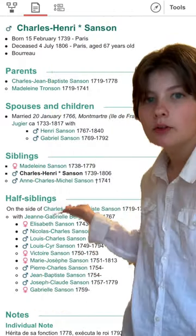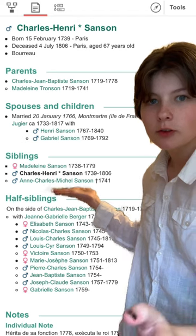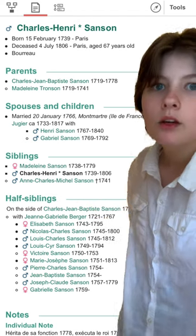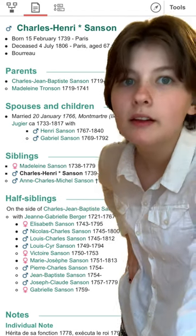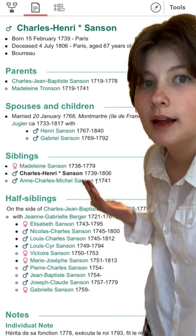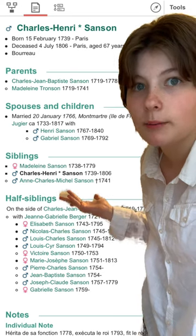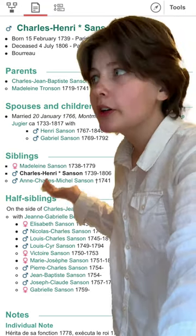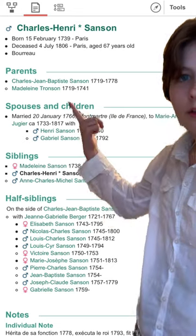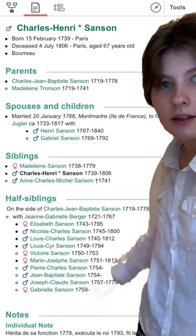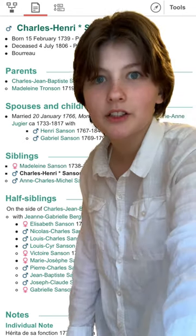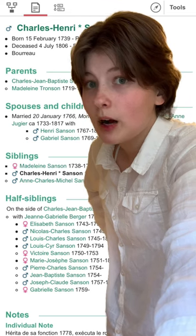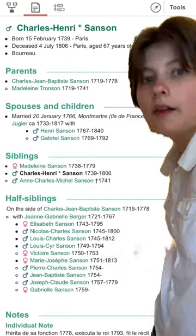I was looking at his siblings and there was one who stood out to me — like, what does this mean? I realized that probably meant that they died before they were born, so I assumed miscarriage. But then I saw that his mom died the exact same year, and I realized she died in childbirth. So that's already depressing, though not uncommon for the time period.